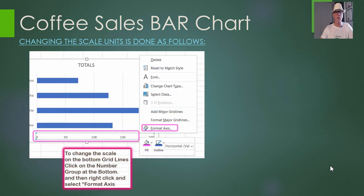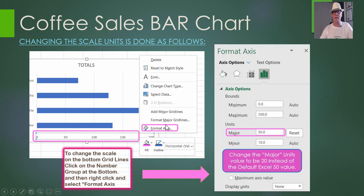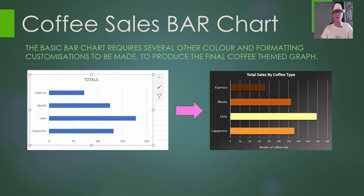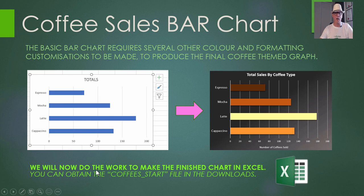Changing the axis scale is something brand new we're learning in this lesson. To change the scale units, you click on the scale markings so they're all highlighted, then right-click and click 'Format Axis' from the menu. It'll be in 50s — just change that to 20 for the major units, and then the scale will be in 20s. Let's get to work — download that Coffee Start Excel and start it up.